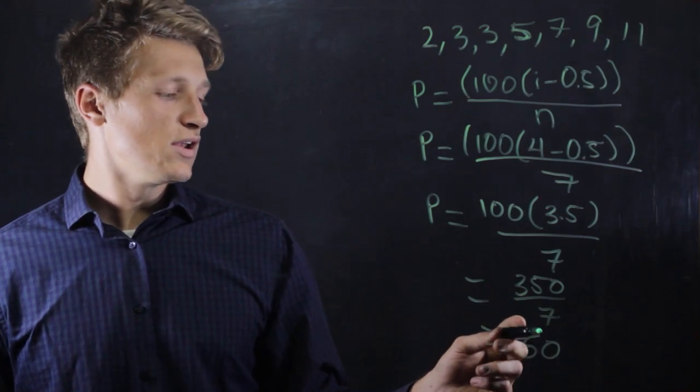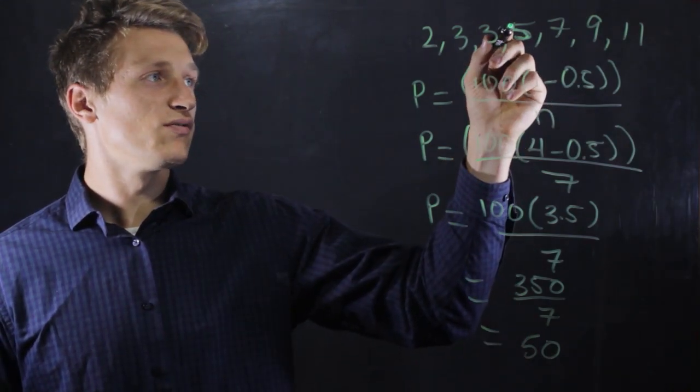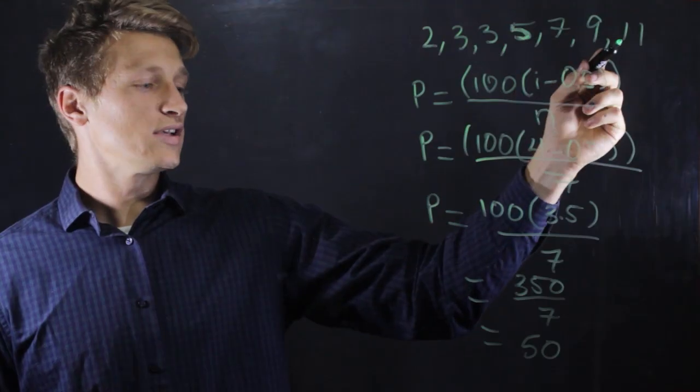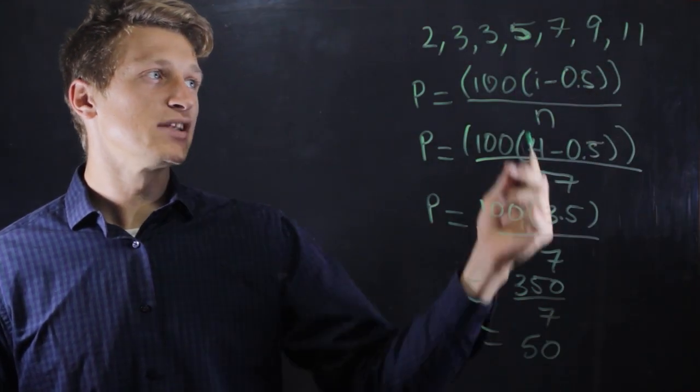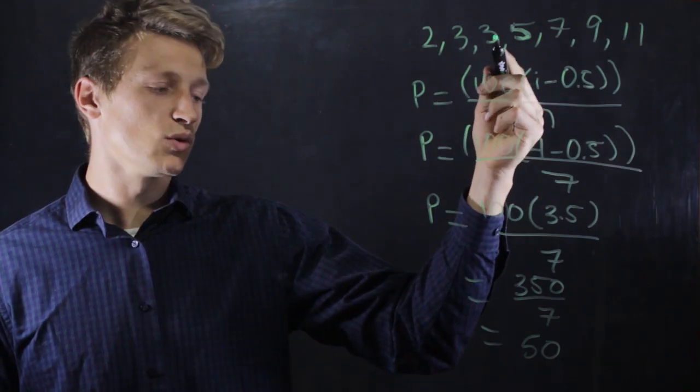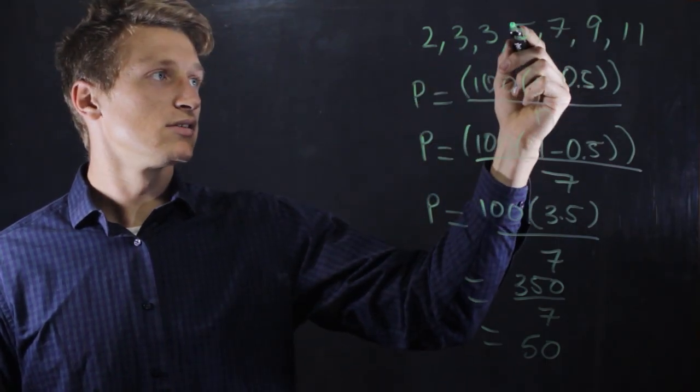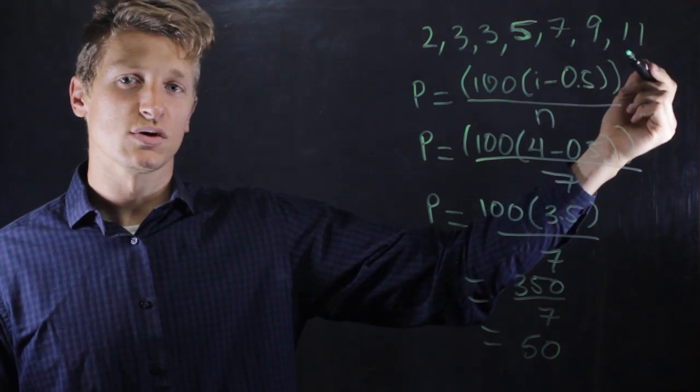So now we know that the percentile rank of somebody who scored 5, out of all these students, his percentile rank is 50%. That means 50% of the students scored below him, and 50% of the students scored above him.